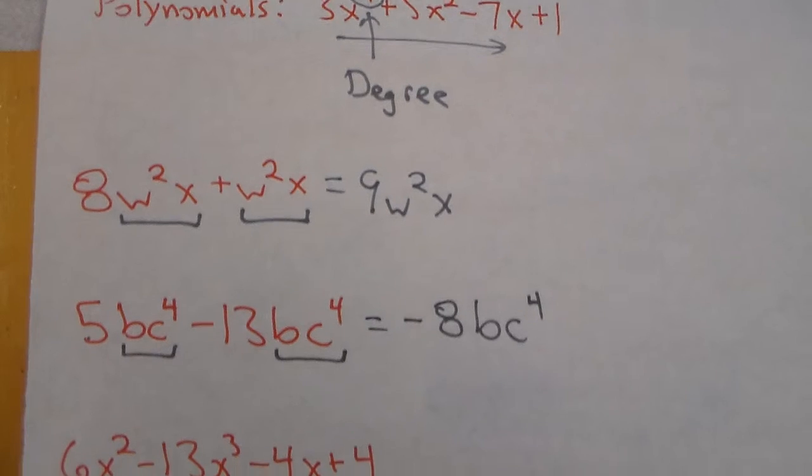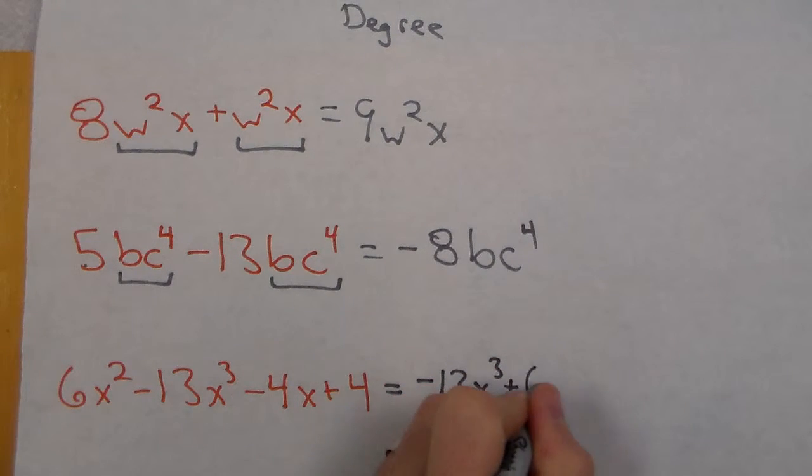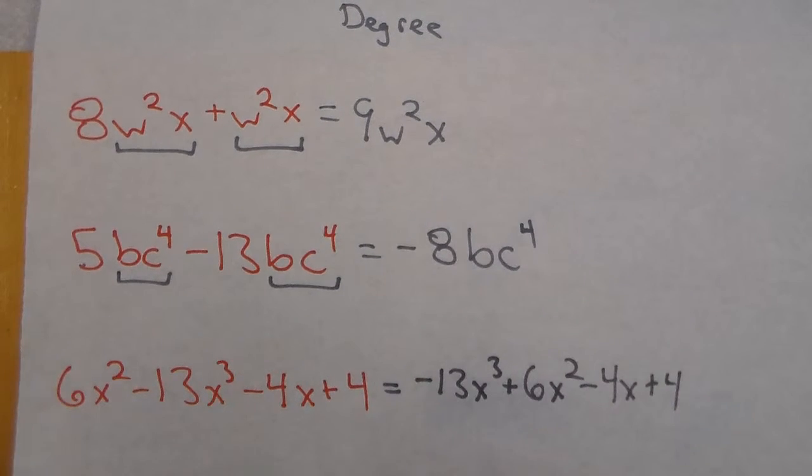But sometimes we may come across ones that look like this and we need to make sure it's written in the correct form. So this one, the 13x³ has to go first. Then we go plus 6x² minus 4x plus 4. This would be a third degree polynomial. Degree is 3. We have it in the correct descending order. We have no like terms so we'll leave it as that.